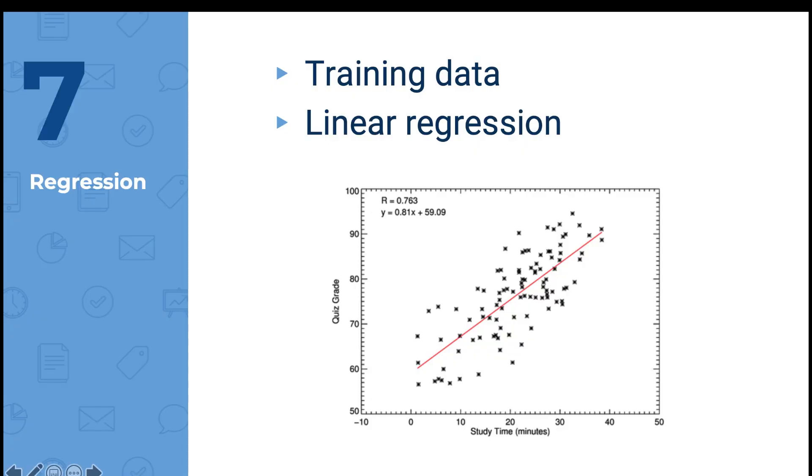For example, if I input students' study times and their corresponding grades into a computer, a linear regression returns y equals 0.81x plus 59.09, where x is the study time in minutes and y is the quiz grade. I can use this model to make predictions. So if someone studies zero minutes, he or she can still get 59 marks for the quiz.